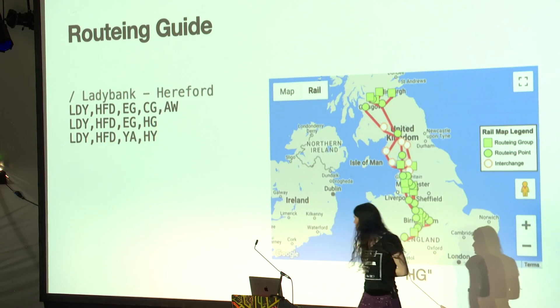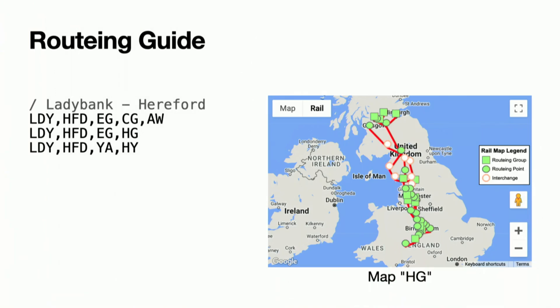There's also a dataset on the fares front called the routing guide. That's the rules for: if I have a ticket from point A to point B, what routes am I allowed to take? Between pairs of stations it gives you a list of maps, and these maps show what lines you're allowed to follow. You put the maps together to get the valid route between two stations. If you know what this means, it's potentially very interesting — and if not, you could learn what it means. It's a fairly niche thing but interesting in its own right.